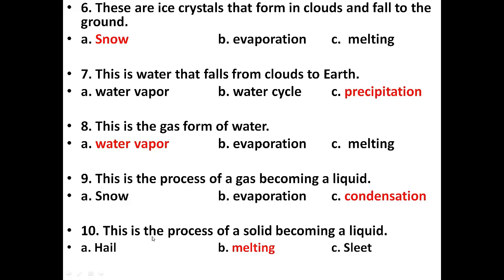Next: This is the process of a solid becoming a liquid. Options are hail, melting, sleet. The answer is melting, B. When you keep solid ice in an open place, the ice starts melting into liquid. So the process of a solid becoming a liquid is melting.